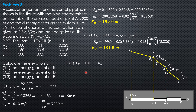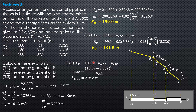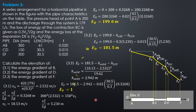The elevation of the energy gradient at F is 181.5 minus the expansion loss minus the friction loss in EF. The expansion loss is (10.13 − 2.532) squared over 19.62 = 2.942 meters. Substituting: elevation at F = 181.5 − 2.942 − (0.02 × 30.5 / 0.3 × 0.3268) = 177.9 meters.